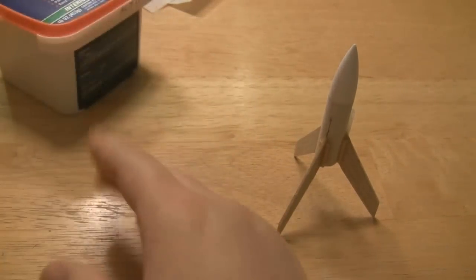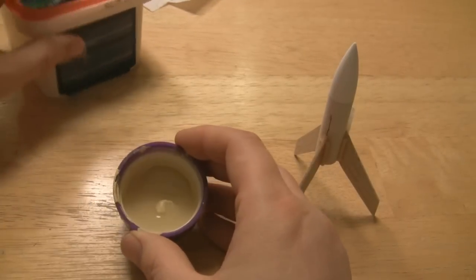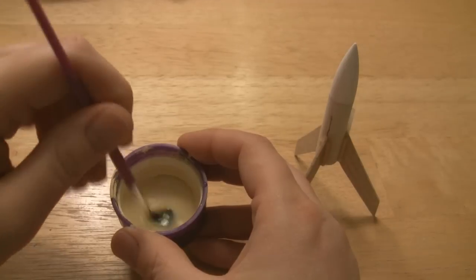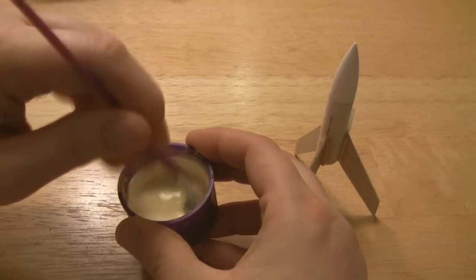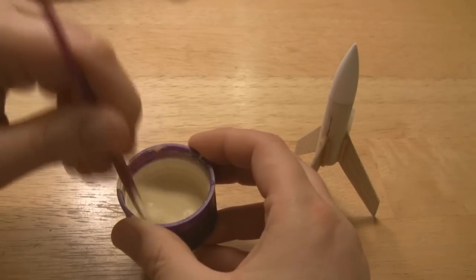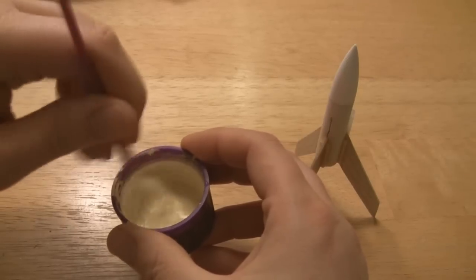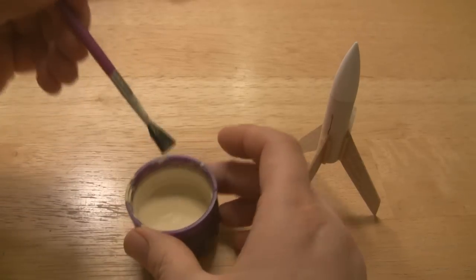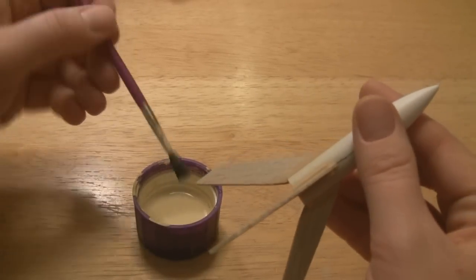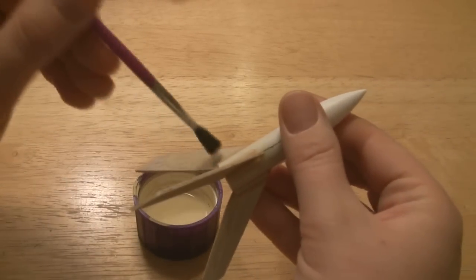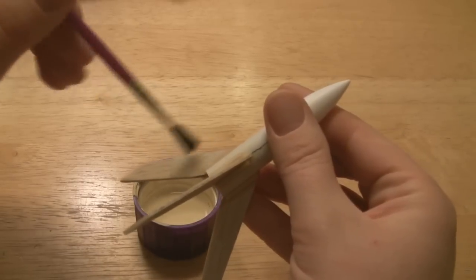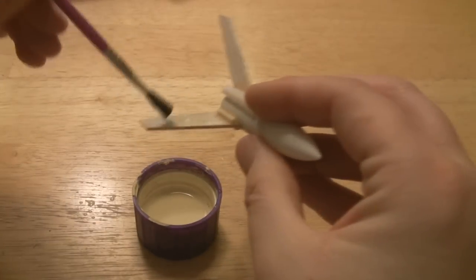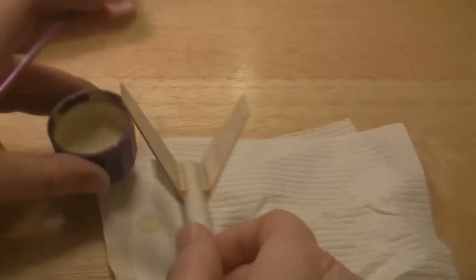And you just put a little dollop in a little container. This is a cap, a semi-disposable container. Mix it up with the water. It'll be a paint-like consistency. And I just have a regular old hobby brush here. And you paint it on to each fin. Paint this on the wood.